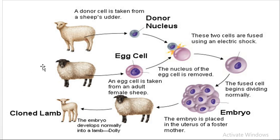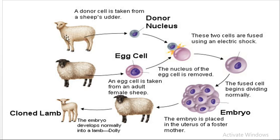In animals, especially vertebrates, we use this technique to produce a new organism. We use a nucleus from somatic cells. Somatic cells are any body cells other than sexual cells — we don't use gametes. These are all somatic cells, which are not sexual cells or gametes.